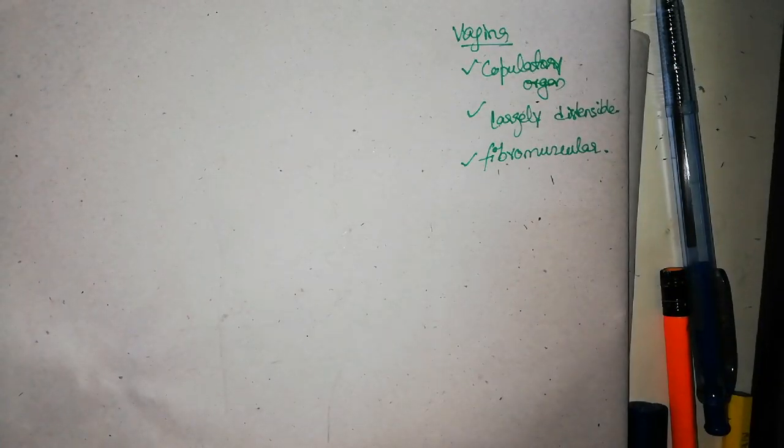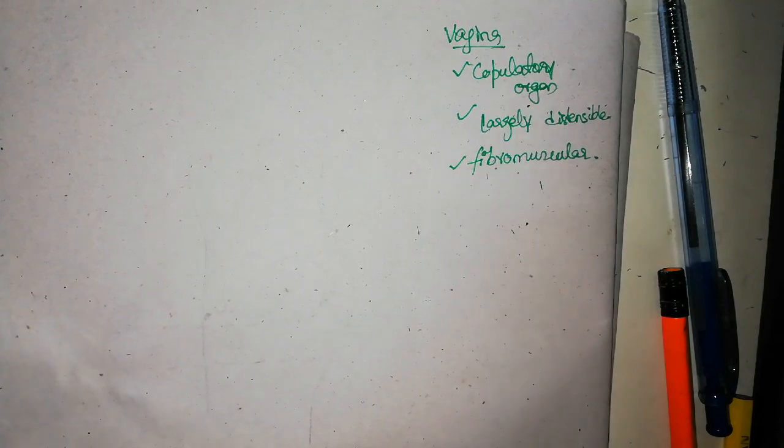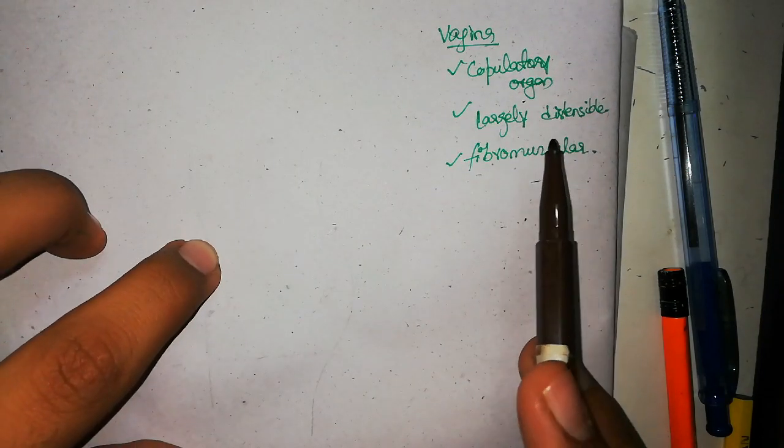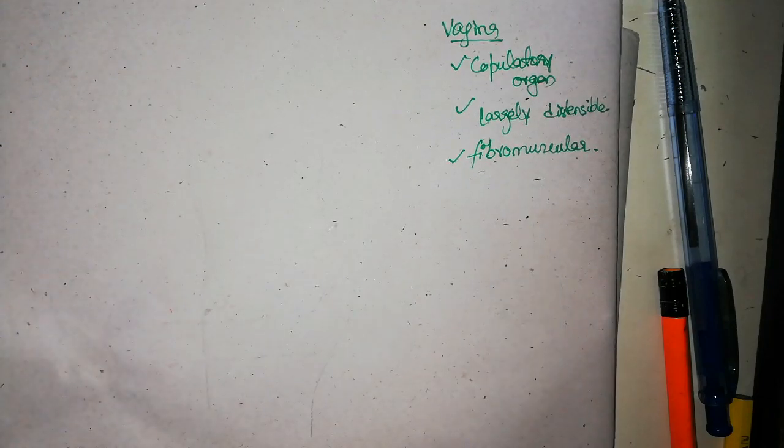So let's talk about vagina now. As I have written right here, the vagina is a copulatory organ and it is largely distensible due to the head of the fetus during delivery, and it is a fibromuscular copulatory organ.